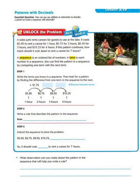Let's begin by taking a look at our unlock the problem. A state park rents canoes for guests to use at the lake. It costs $5 to rent a canoe for one hour, $6.75 for two hours, $8.50 for three hours, and $10.25 for four hours. If this pattern continues, how much should it cost Jason to rent a canoe for seven hours?